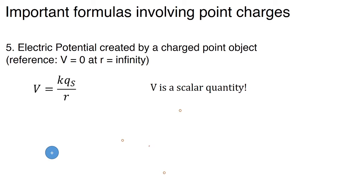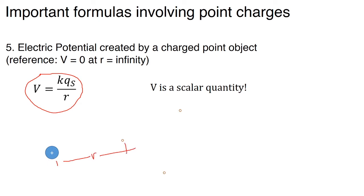There is another concept: the electric potential created by a charged point object, whose reference is V equals 0 at r equals infinity. The formula is V equals kQs over r. It is a number you assign — a property of space caused by the presence of a charge, where Qs is the source charge and r is the distance from the source to any point in space. The SI unit of V is joules per coulomb.